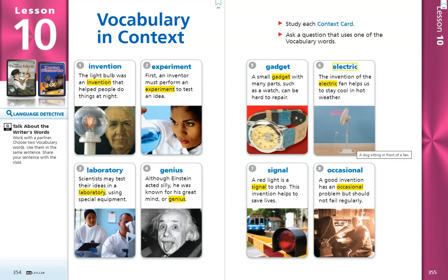A big clue for us that something is electric is if it has a cord that plugs into a power outlet in the wall. Number 7. Signal.